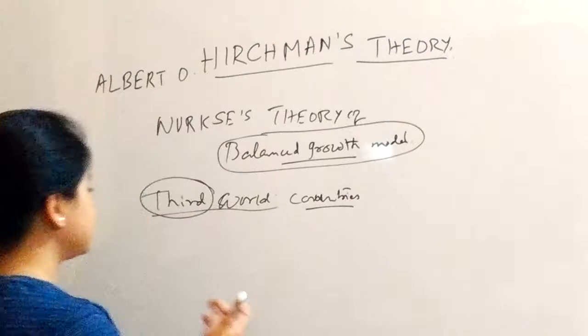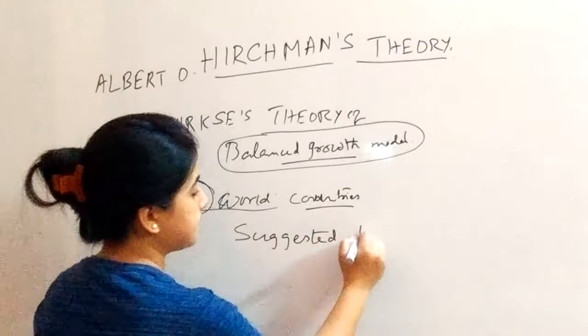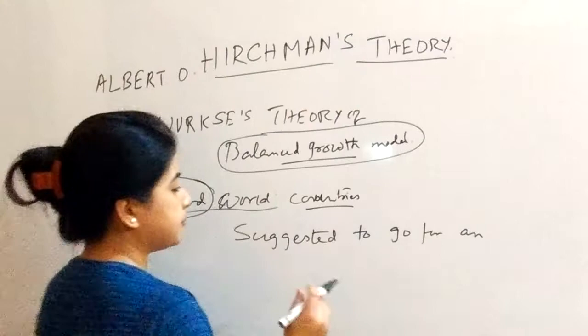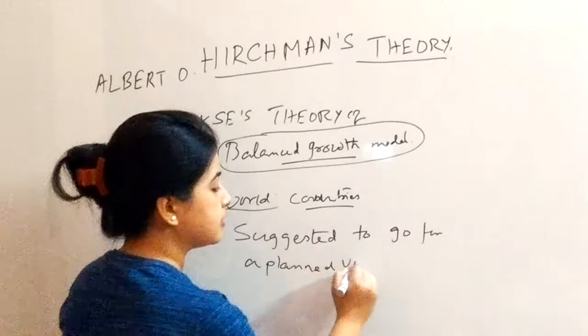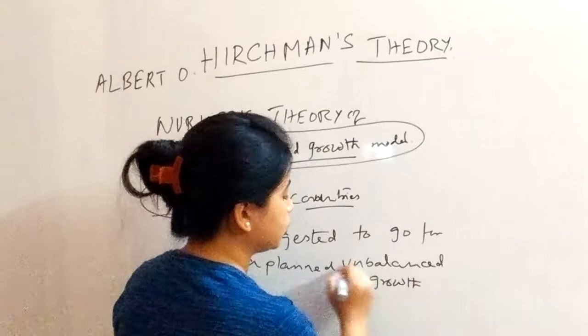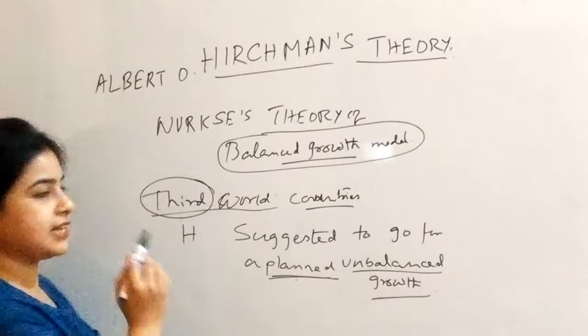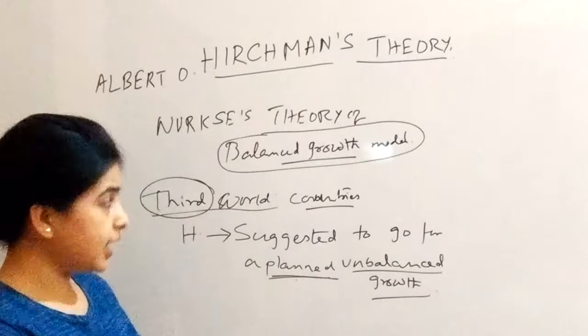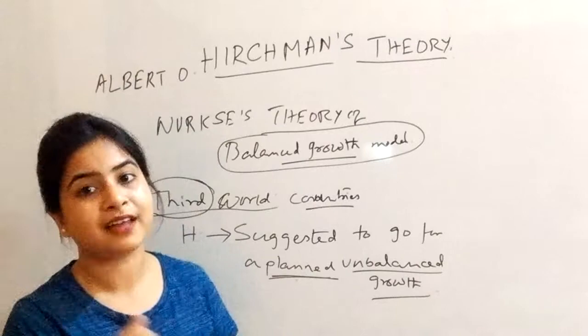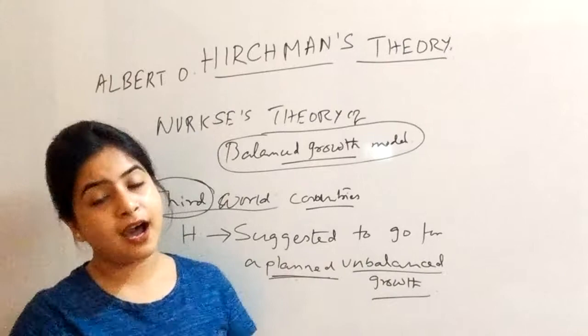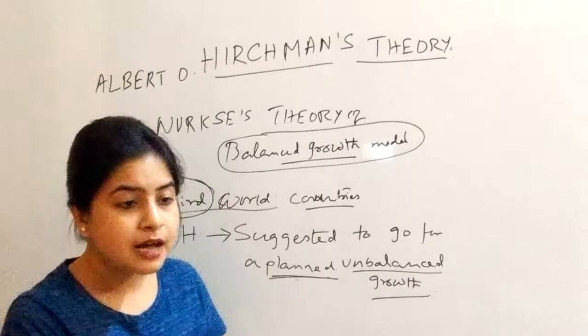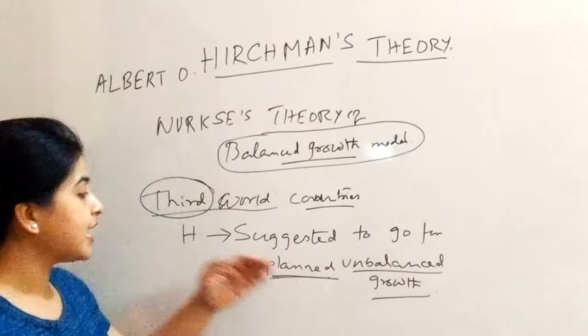Hirschman suggested going for a planned unbalanced growth. He thought that the exact constituents cannot be determined with certainty everywhere, so we cannot go for an unsure thing like balanced growth. Ultimately, yes, balanced growth has to be achieved, but the question is how much growth should be in every sector — that is what matters. This is why planned unbalanced growth for the third world countries would give them an edge.